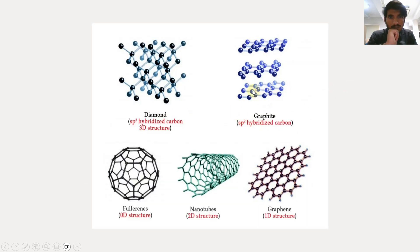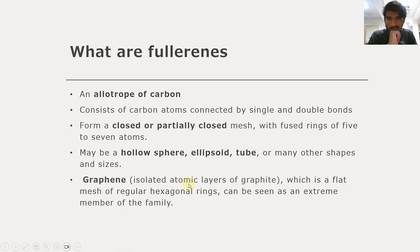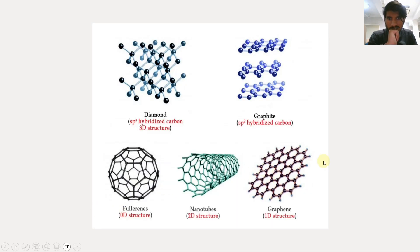Graphite is composed of many graphene layers connected by bonds. When a single layer is separated from graphite, that single layer is known as graphene. Graphene is an isolated atomic layer of graphite — a flat mesh of regular hexagonal rings — and can be seen as an extreme member of the fullerene family. So the fullerene, the nanotube, and graphene are all types of fullerenes.